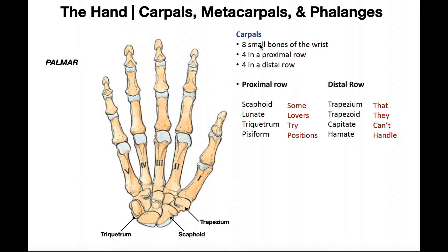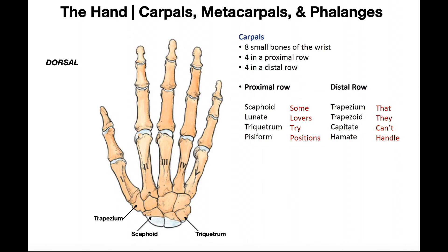With these eight bones we can group them into two rows of four bones — a proximal row and a distal row also with four. We're going to first look at the proximal row. Now when we're looking at the bones of the hand and learning them, there are really two things we need to be concerned about. One is whether or not we're looking at a palmar surface of the hand or a dorsal surface.